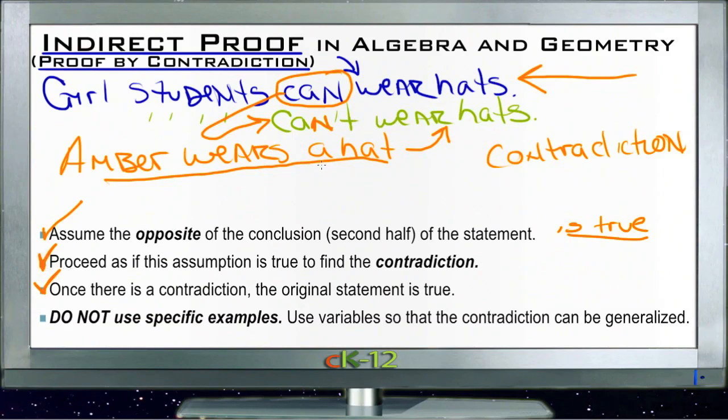Finally, we want to make sure we're not using specific examples. I didn't do a very good job of that with my particular layout here because I chose Amber in particular. But what I did say was that girl students could wear hats originally, so I've made my original statement much more general. Usually you don't want to pick out a specific example. You just want to say there are five girls in class wearing hats. Obviously girls can wear hats.